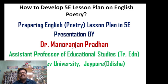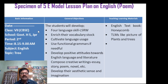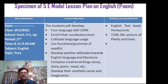Today we will discuss preparing a lesson plan in the English language. Before preparing the lesson plan, you have to prepare the general objectives and specific objectives. This is the format: you have to write basic information like date, class, school, period, time, subject, topic, etc. Then write the general objectives — for example, students will develop four language skills (LSRW), enrich their vocabulary, cultivate language usage, use functional grammar if needed, develop positive attitudes toward English language and literature, and compose creative writing like essays, stories, or poems.